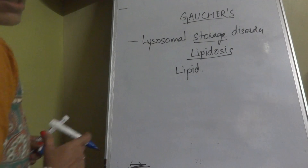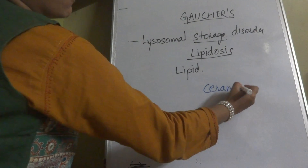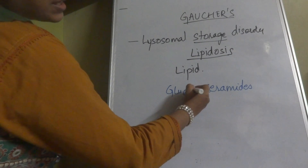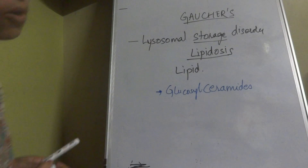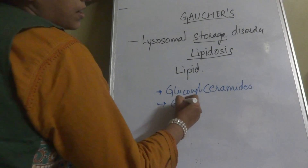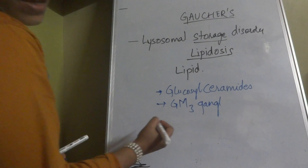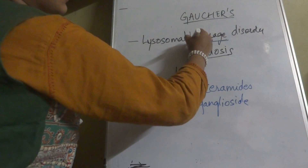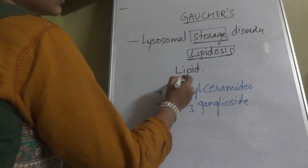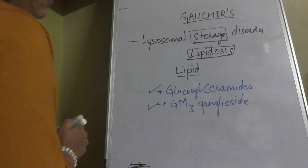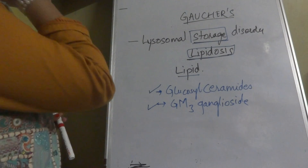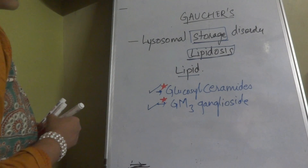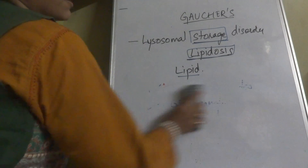If you have seen the previous lecture on phospholipids, you may remember that there are certain ceramides which are lipids. The lipid stored in this disease is glucosylceramide, and the most frequently accumulated lipid is GM3 ganglioside. So Gaucher's disease is a lysosomal storage disorder where glucosylceramide or GM3 ganglioside accumulates.